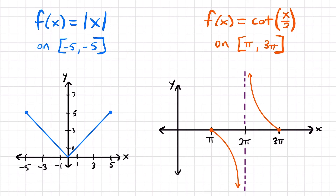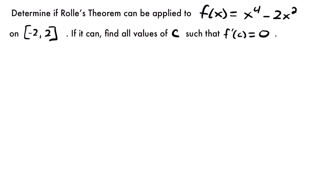Keep that in mind when applying Rolle's Theorem to different functions. If a function is not differentiable somewhere, or not continuous — such as having an asymptote or a break — then you cannot apply Rolle's Theorem. So let's look at another example. We want to determine if Rolle's Theorem can be applied to the function f of x equals x to the 4th minus 2x squared on the interval from negative 2 to 2. If it can be applied, we want to find all values of c such that the derivative at those points is 0.